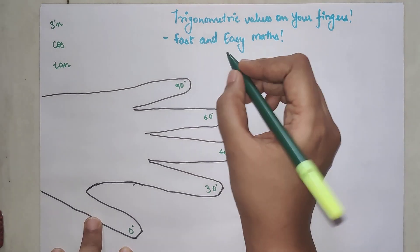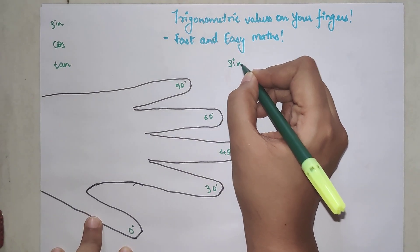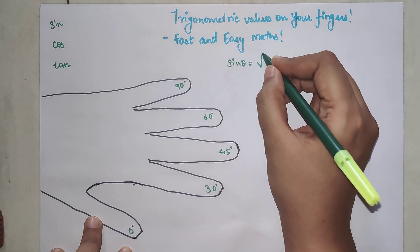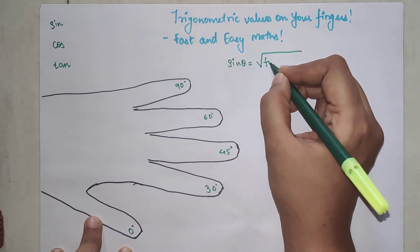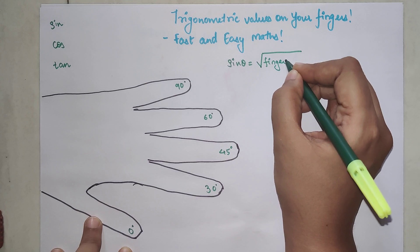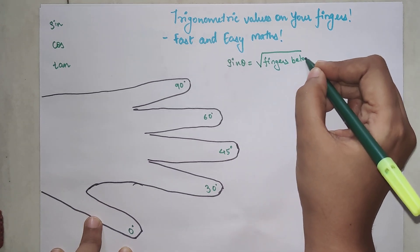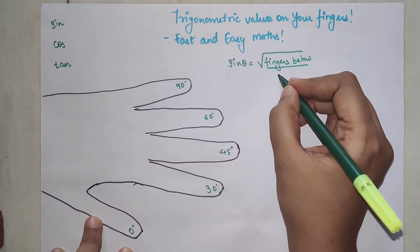Now what is the formula for sin theta? Please understand that sin theta formula is nothing but root of fingers below upon 2.